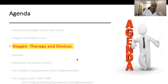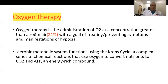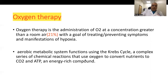Oxygen therapy is used mainly for hypoxemia, and other pathological conditions. Oxygen therapy is the administration of O2 at a concentration greater than normal air, which is around 21%, with the goal of treating or preventing the symptoms and manifestations of hypoxia. The aerobic metabolism system functions using the Krebs cycle — a series of chemical reactions that use oxygen to convert nutrients to CO2 and ATP. So the main use of oxygen in our body is to generate ATP, which is the energy source.